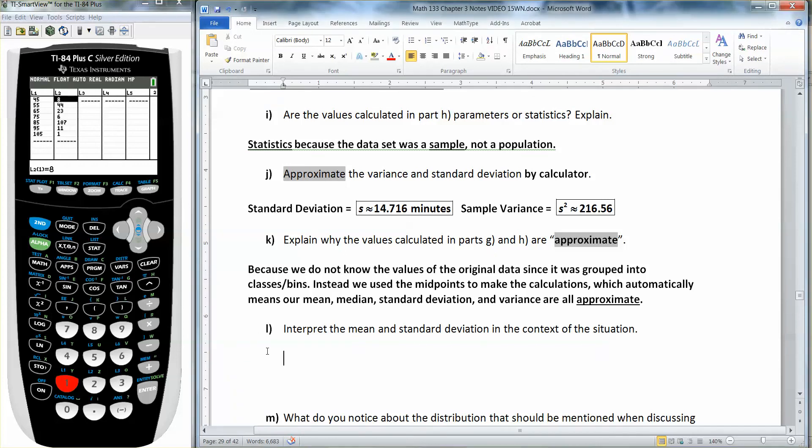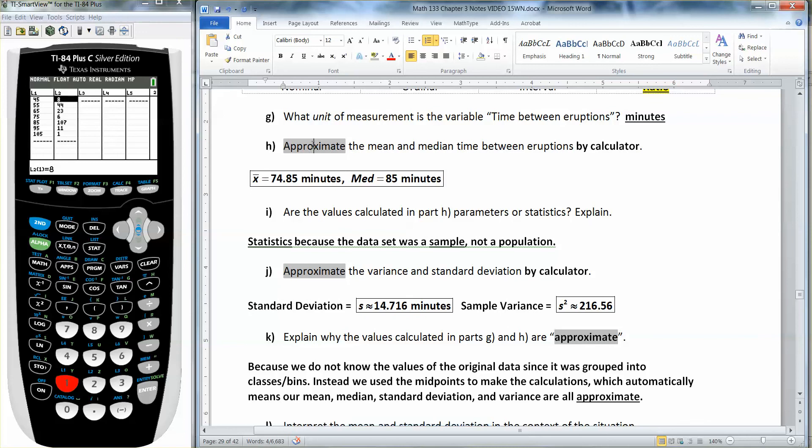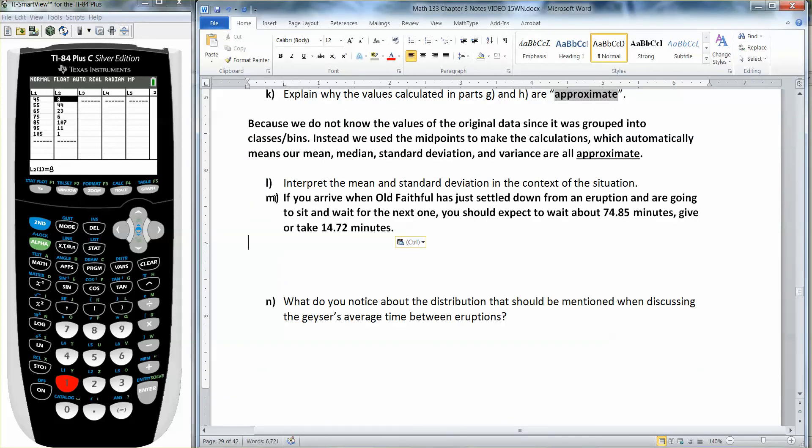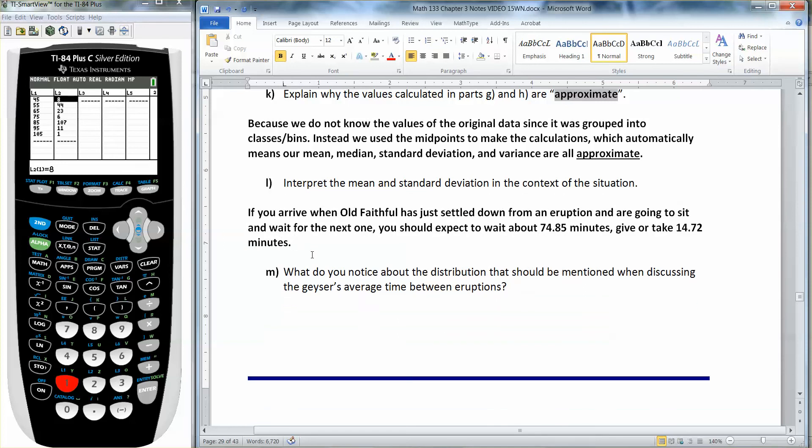Now, if you were to arrive at Old Faithful, how long do you expect to wait? Well, that's what the mean and the standard deviation kind of tell you. The mean tells you you're going to wait about 74.85 minutes. And the standard deviation for our purposes right now is basically the give or take, give or take 14.716 minutes. That's what the mean and standard deviation get interpreted as. So you'd say, okay, I expect to wait, if I arrive at Old Faithful right now, I expect to wait 74.85 minutes. So more than an hour, give or take about 15 minutes, 14.72 minutes.